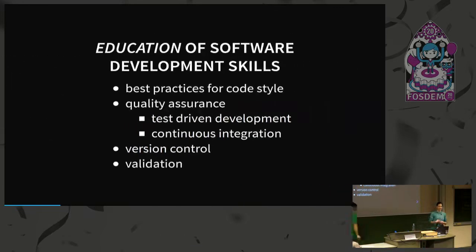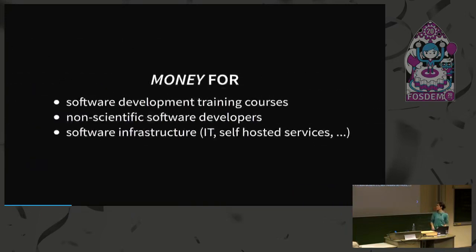Also in science, when you study a certain field, you might be an expert in that field but know nothing about how to develop software. People going into science usually don't know about best practices for code style, how to assure code quality, version control — which is completely new to most of them — or how to validate your code with respect to previous publications. Additionally, money needs to produce publications and is not usually available for sending scientists to software development training courses or for having non-scientific software developers in your lab, or infrastructure like a continuous integration system.